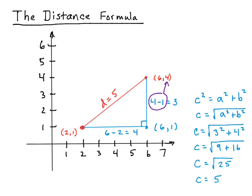When you look at where we get these numbers, if you look at 4 - 1, the 4 comes from the y value of the upper point, and the 1 comes from the y value of the first point. Similarly, we have 6 - 2. The 6 comes from the upper right-hand point, and the 2 comes from the lower left-hand point, and both of them are the x values there.